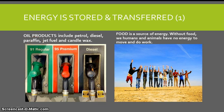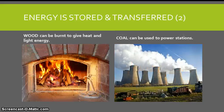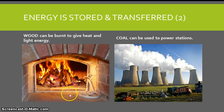Food is a source of energy. Without food, we humans and animals have no energy to move and do work. Wood can be burnt to give off heat and light energy. Those are kinds of energy, heat and light. And coal can be used to power stations.